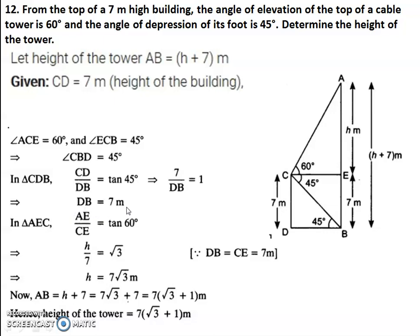In triangle AEC, we are taking tan 60 degrees — this is the angle of elevation case. Tan 60 degrees equals AE by CE — opposite side by adjacent side. CE is the same as DB, which is 7 meters. So tan 60 degrees equals AE by 7. Tan 60 degrees is root 3, so H by 7 equals root 3. By cross multiplying, H equals 7 root 3.